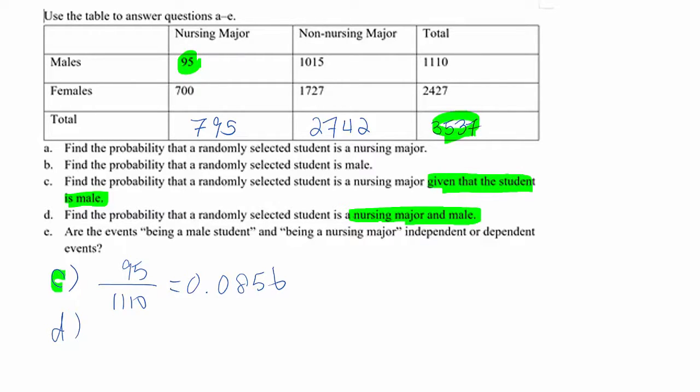No condition means over total. So it should be 95 over 3537, then 95 over 3537 equals 0.0269.